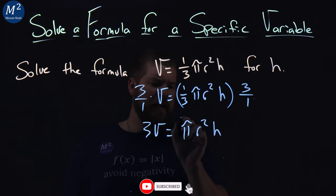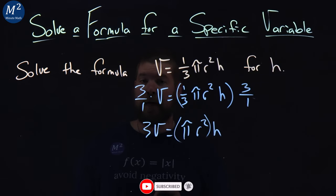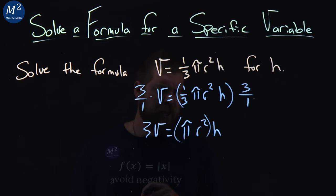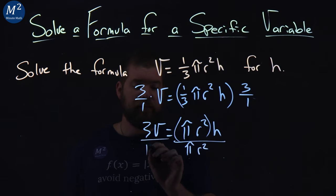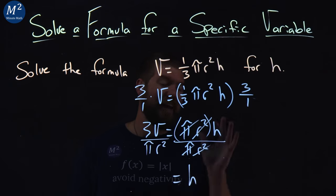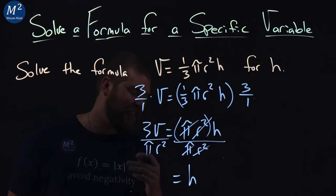Now, this πr²h really is πr² multiplied by h. So if I divide both sides by πr², the πr² on the right goes away. h doesn't get eliminated; everything else gets eliminated.